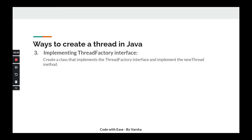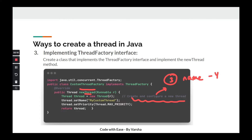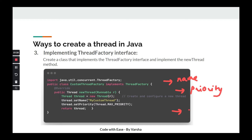Since ThreadFactory is an interface, we cannot use it directly — we have to create a concrete class that implements it. The interface has one abstract method we must override: newThread. While overriding newThread, we are essentially creating and configuring a new thread. There are three things we can configure: we can set a custom name for the thread, we can set a priority (max or min), and we can set a daemon status — whether the thread runs in the background. These are the different customizations available when implementing the ThreadFactory interface.